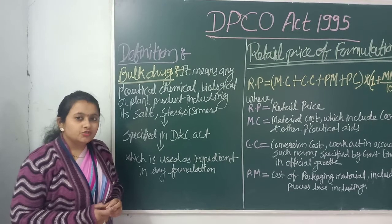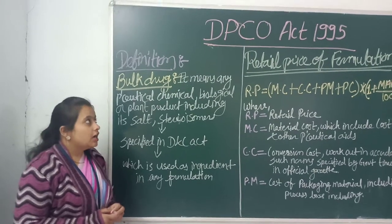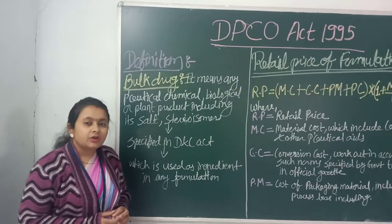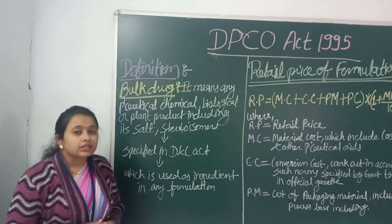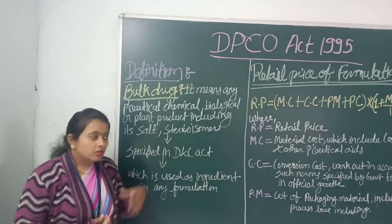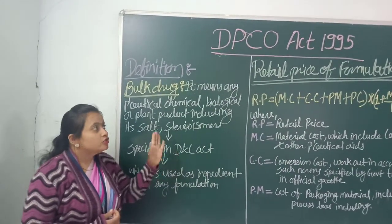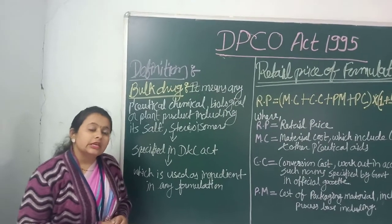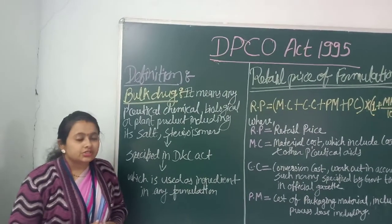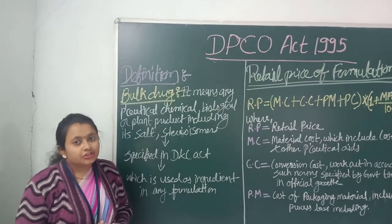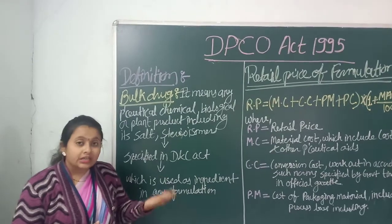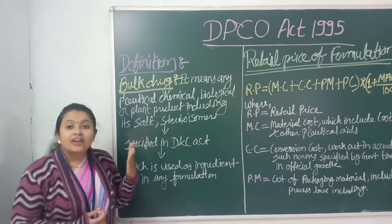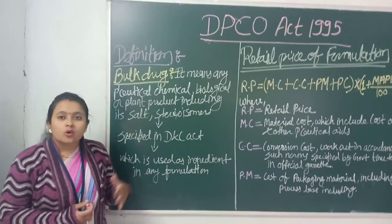Good morning students. Today we are going to see the DPS Act — specifically the Drug Price Control Order Act. It was started in 1995. We are going to see the definitions, the objective, and the definitions of retail price, selling price, dealer and distribution.